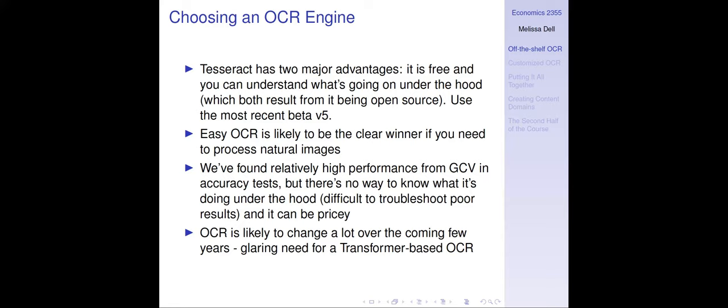OCR is likely to change a lot over the coming few years. The state-of-the-art architecture combines a CNN with an LSTM and CTC loss, but transformers have completely revolutionized NLP and people don't really use LSTMs much anymore. Transformers haven't been broadly adopted in OCR yet because of the work required to get the details right and the expense of pre-training, but once a transformer-based OCR that just works arrives, it's likely to be more powerful and faster. This is an area where technology is rapidly evolving.